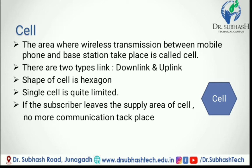A single cell system is quite limited. The further a subscriber is from the base station, the lower the quality of the radio link. If the subscriber leaves the supply area of the cell, no more communication is possible. To overcome this limitation, cellular systems were introduced. In the figure, we can see the shape of a cell is hexagon.